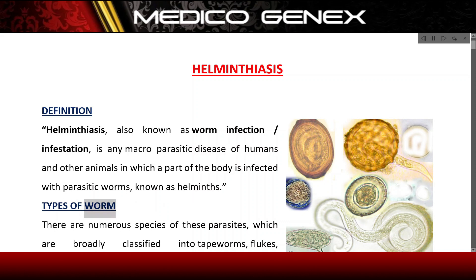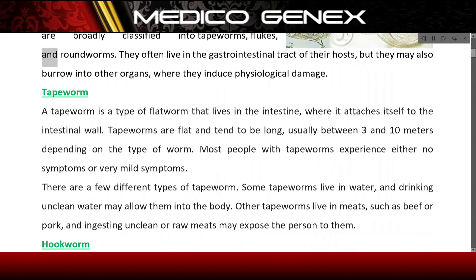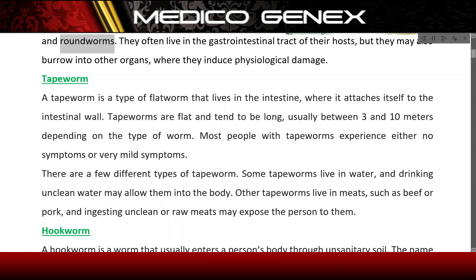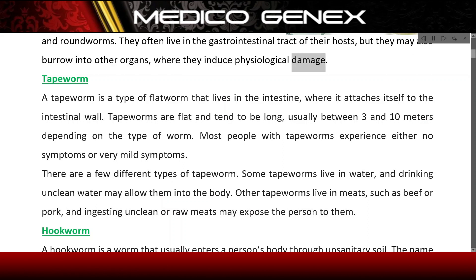Types of worm. There are numerous species of these parasites, which are broadly classified into tapeworms, flukes, and roundworms. They often live in the gastrointestinal tract of their hosts, but they may also burrow into other organs, where they induce physiological damage.